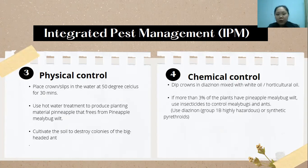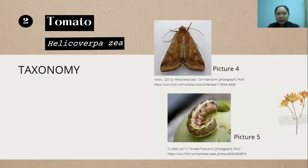The last method is chemical control. We can dip the pineapple crown in dioxinon mixed with horticultural oil. If more than three percent of the plants have been infected, we can use insecticides to control the mealybug and ants, for example using dioxinon or synthetic pyrethroids.